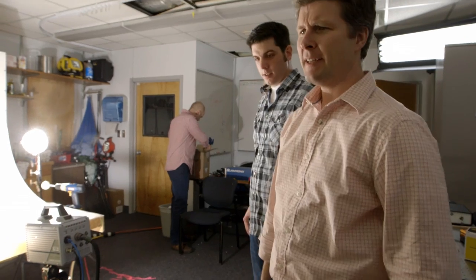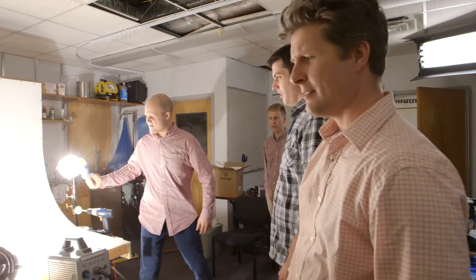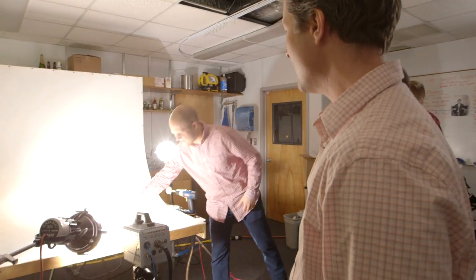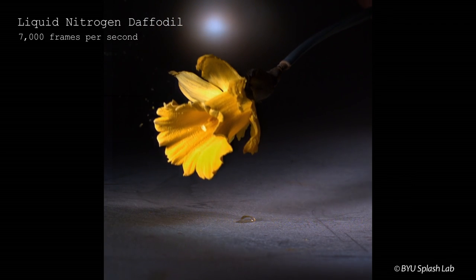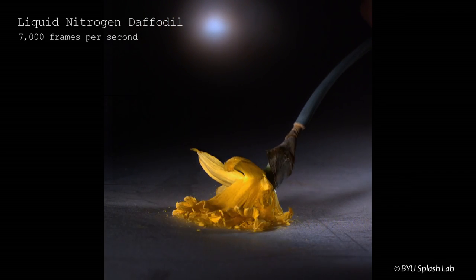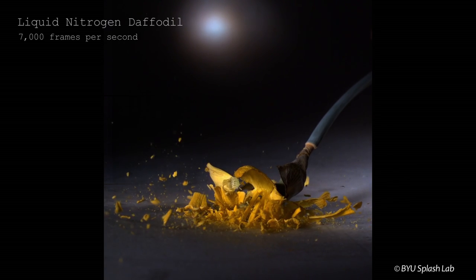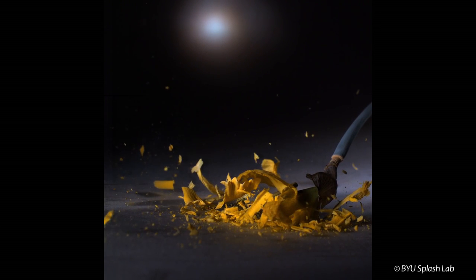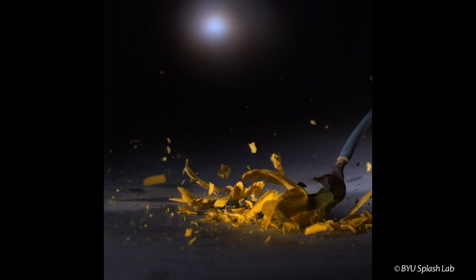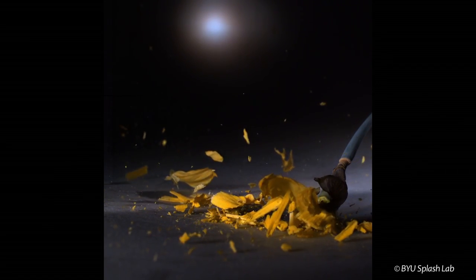All right so it's springtime so we got some daffodils. That's actually really cool. Slowing things way down with this camera at 7,000 frames per second we can turn daffodils into daffodil dust. In fact I've heard that this is what fairies use for their dust. When fairies need dust they just go ahead and freeze daffodils and then they crush them.